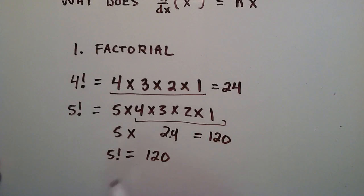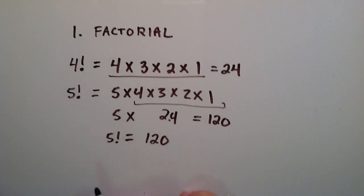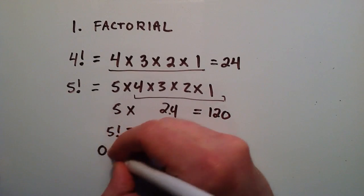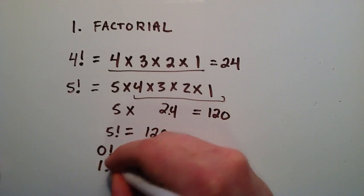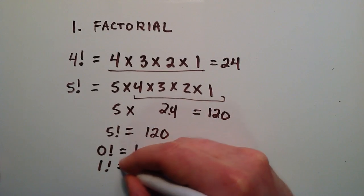And that's basically the fundamentals of a factorial. The only other thing that I should probably mention about factorials is if we have 0 factorial, that's defined to be 1. And 1 factorial is also defined to be 1.